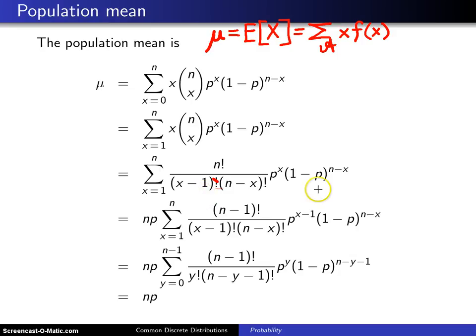Now going from this step to the next step involves a little bit of trickery because if you know what the answer is, and the answer happens to be np, you'll see that's down here at the bottom, you can pull an n out of this summation. And when you pull an n out of the summation, you are left with (n-1) factorial. In addition, you can pull a p out of this summation. You notice that there's x of them here. When you pull one out front, you are left with (x-1) of them.